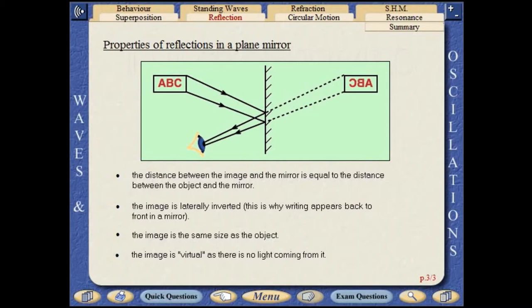The distance between the image and the mirror is equal to the distance between the object and the mirror. The image is laterally inverted, which is why writing appears back to front in a mirror. The image is the same size as the object. The image is virtual, as there is no light coming from it.